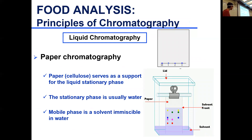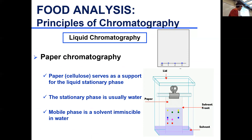In liquid chromatography, we have planar chromatography and column chromatography. In gas chromatography, it's always column chromatography. In liquid chromatography, we have a somewhat qualitative or semi-quantitative measure of separation. Paper chromatography is one older method.